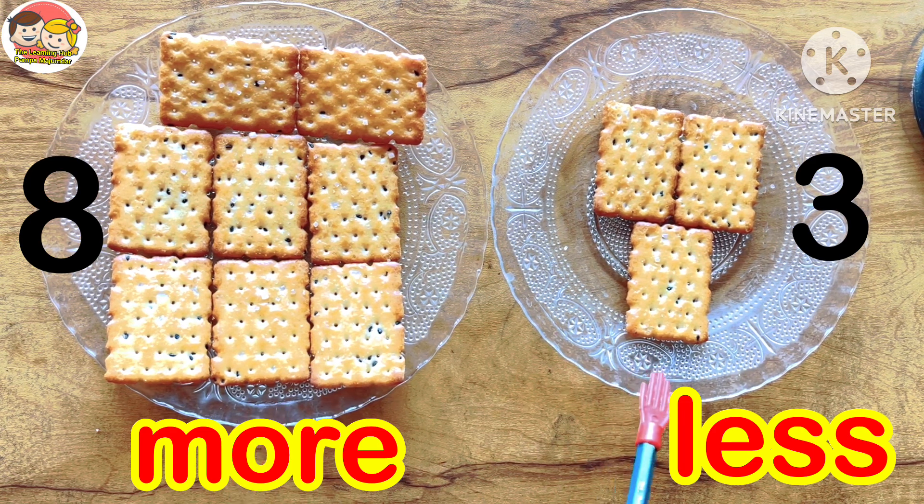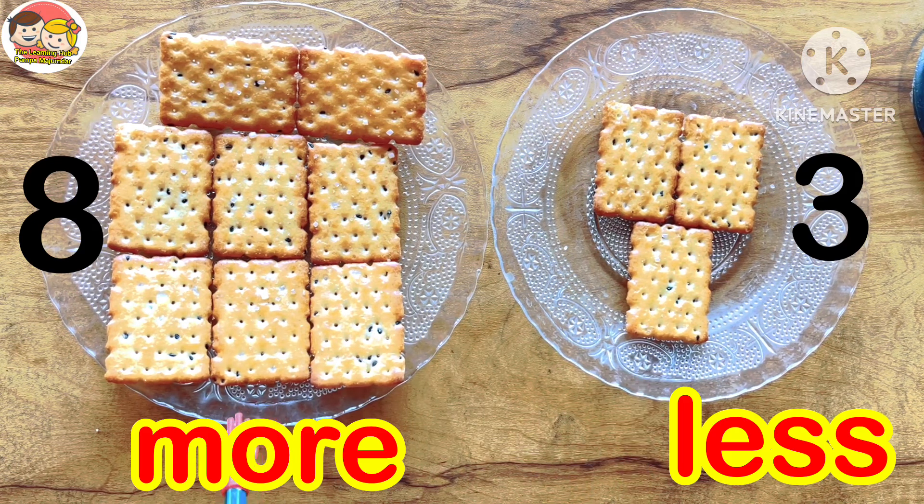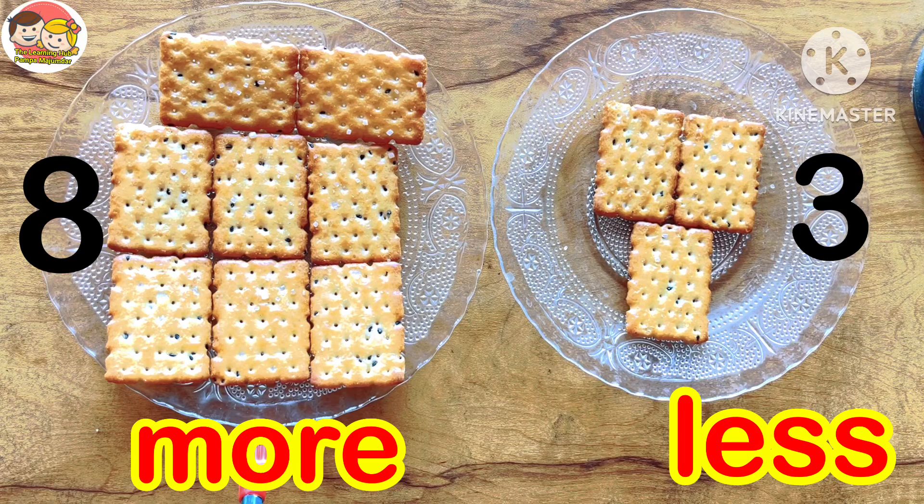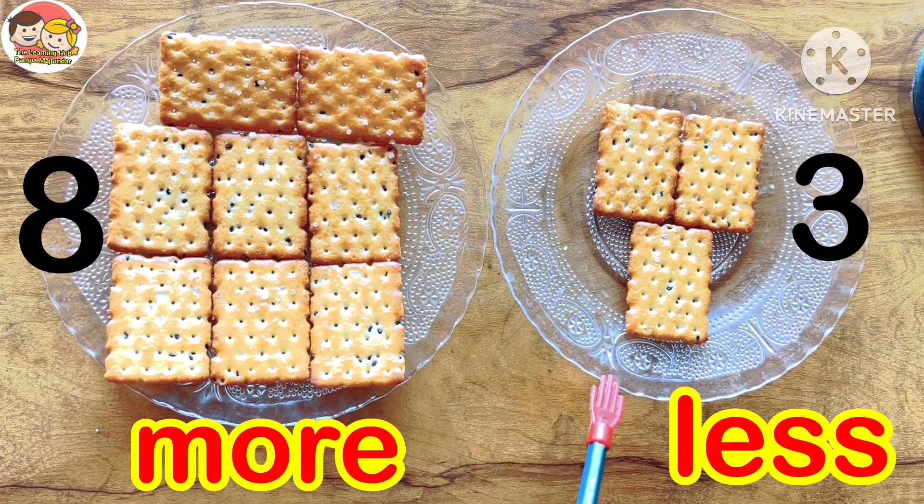More. Less. More. Less. More means large in number or quantity. And less means small in number or quantity.